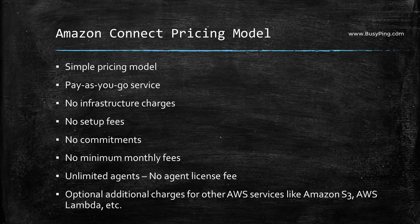Amazon Connect has a simple and straightforward pricing model. Like the rest of AWS services, you pay only for what you use and there are no setup fees, no commitments, and no minimum monthly fees. You do not have to pay for any agent license fee or server fee. You can create as many agent accounts as you wish and any number of agents can log in at a time, but you will pay only for the usage — that is inbound and outbound call charges.